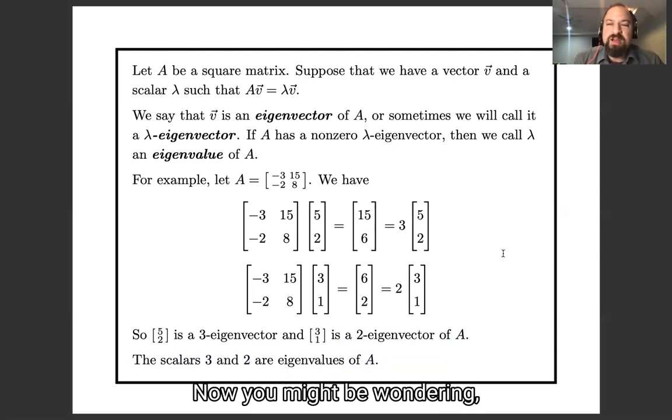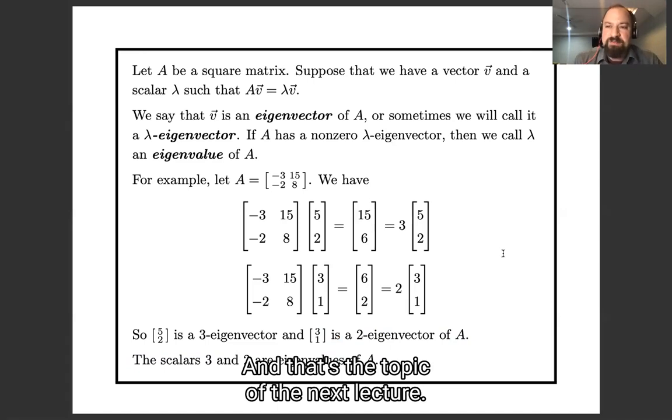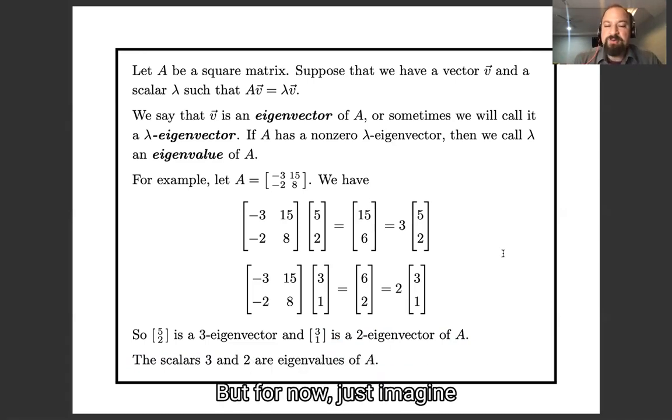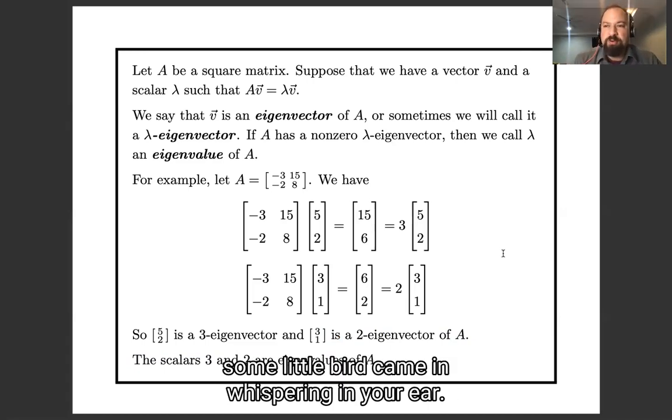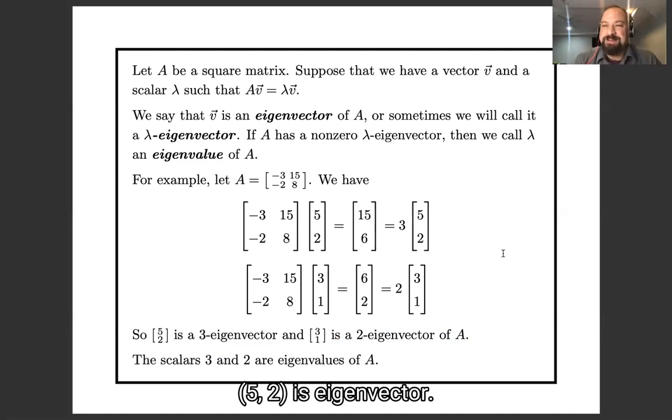Now you might be wondering, how did I find these vectors? How did I find these values? They just seem pulled out of nowhere. And that's the topic of the next lecture. But for now, just imagine some little bird came and whispered in your ear, hey, try the vector [5,2]. And you did, and you found out, hey, [5,2] is an eigenvector. Then what can you do with that?